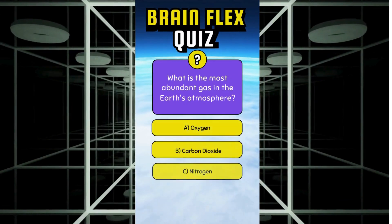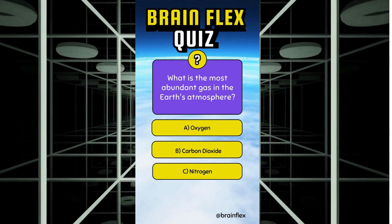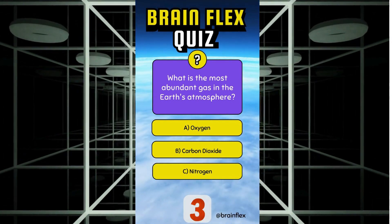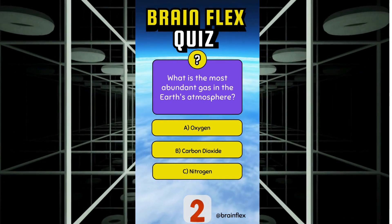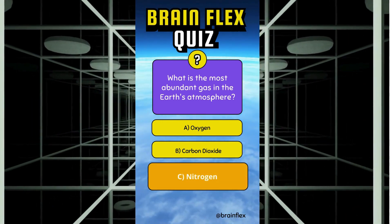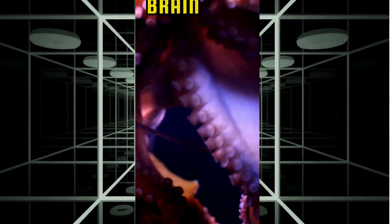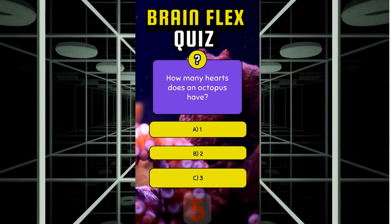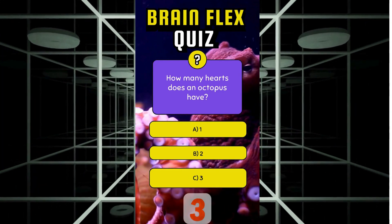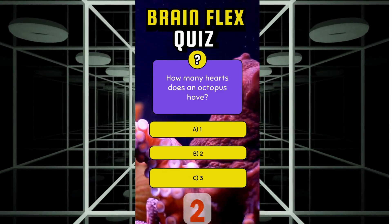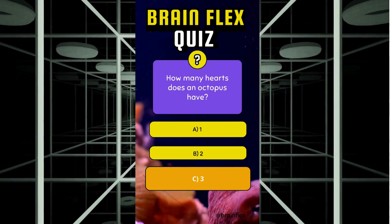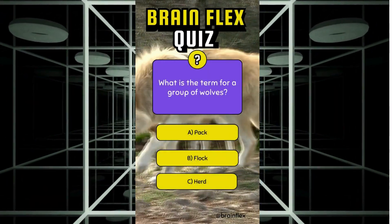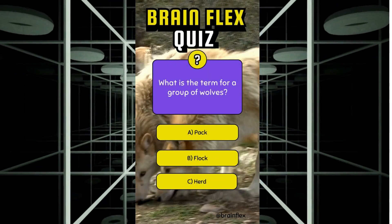What is the most abundant gas in the Earth's atmosphere? How many hearts does an octopus have? What is the term for a group of wolves?